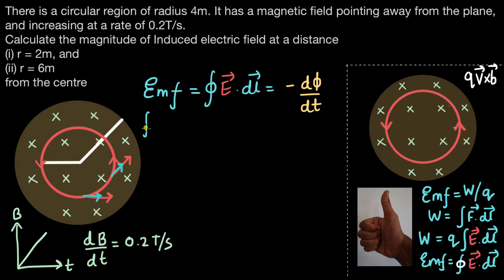The closed loop integral becomes ∮E dL. Since we are at a constant distance of 2 meters from the center, the magnitude of the electric field is the same at every point and can be taken outside the integral, giving E × ∮dL. Integrating dL around this circular path gives the circumference of the loop, which is 2πr. So this becomes E × 2πr.